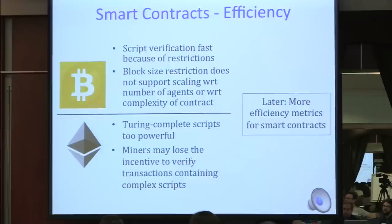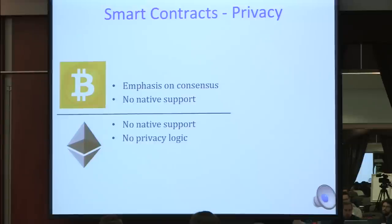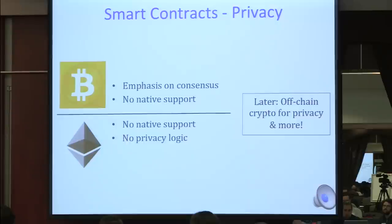Privacy in general is not the main goal for Bitcoin or Ethereum—the focus is instead on enforcing consensus. Later, we'll look at how to use off-chain crypto for enforcing privacy and to get many more features, supporting the fact that privacy need not be natively supported with Bitcoin. We'll use off-chain crypto for taking care of that.